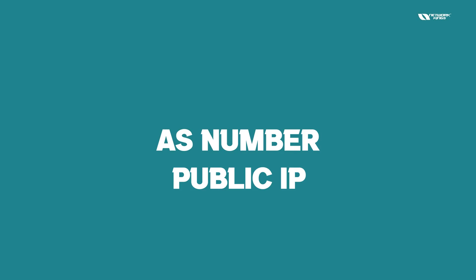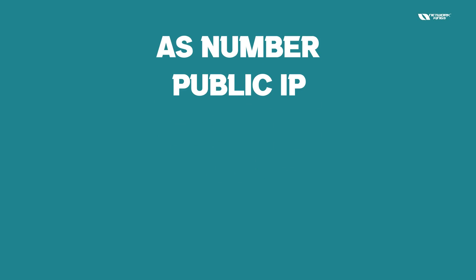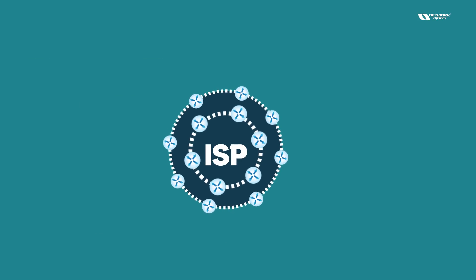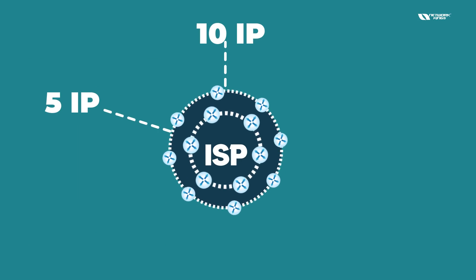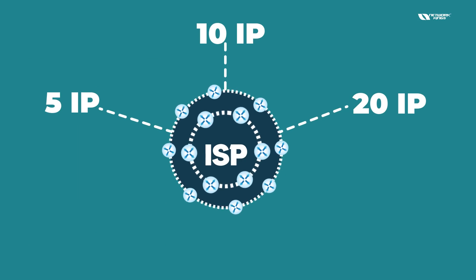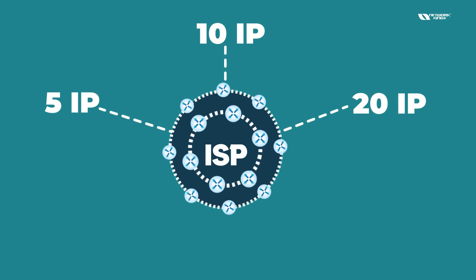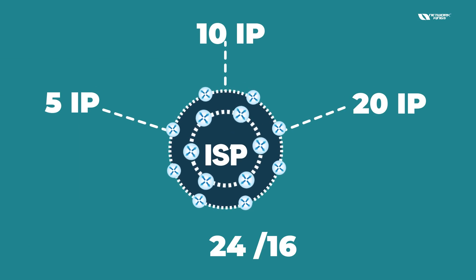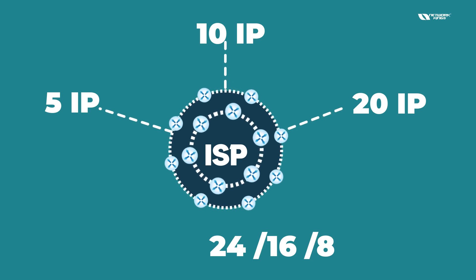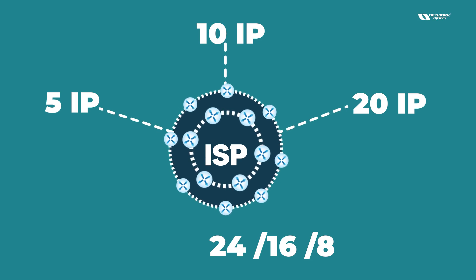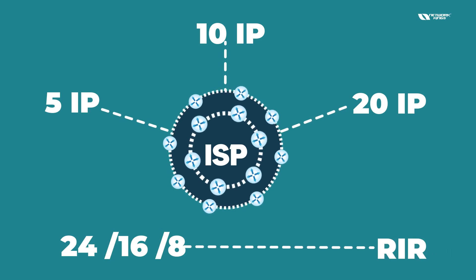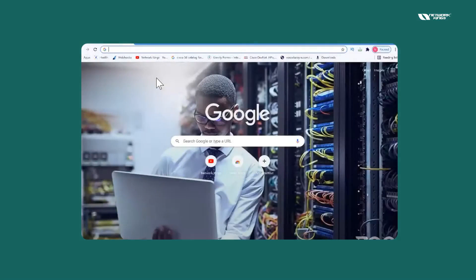If you want to get an AS number or any public IP, you will contact your regional RIR directly — for example, APNIC. Your ISP gives you 5, 10, or 20 IPs, but if you need a block — if you need a /24, /16, /8, or maybe a large IPv6 range — you will contact the RIR.